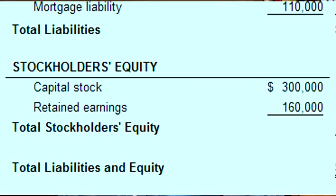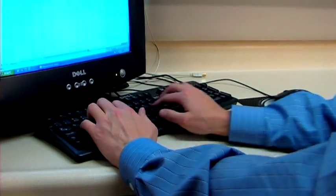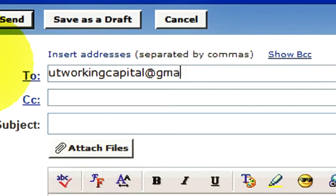Under stockholders' equity, there are only three main classes. The first is contributed capital given from the shareholders of the company. The second is additional paid-in capital, which is any value that a stockholder may have paid in addition to the original par amount. The third classification is retained earnings, which is any money that has been earned over previous years, less any dividends that have been paid. For further questions, contact us at utworkingcapital@gmail.com.